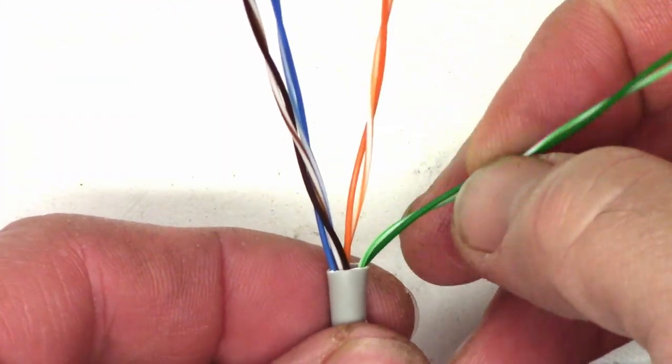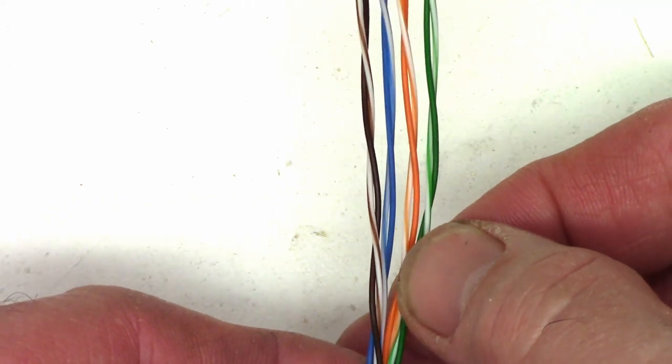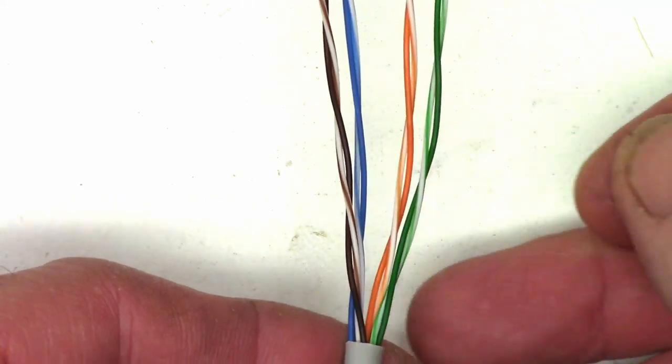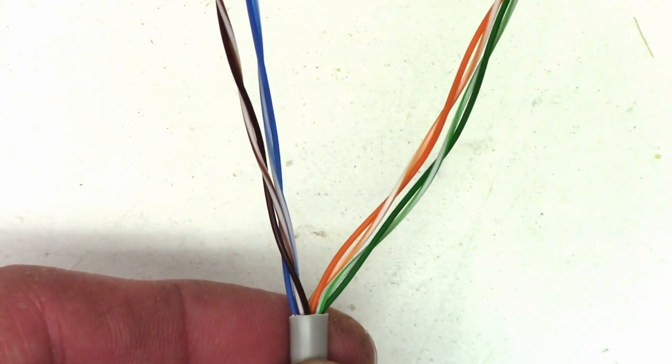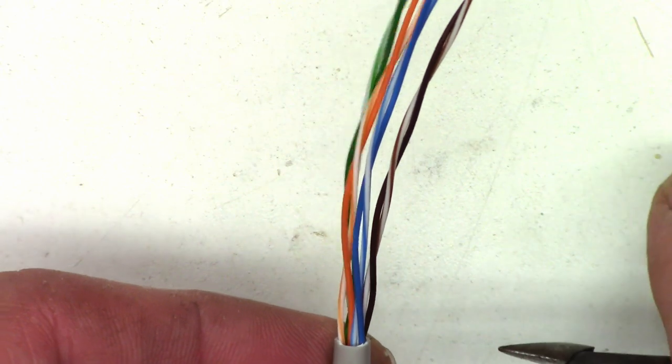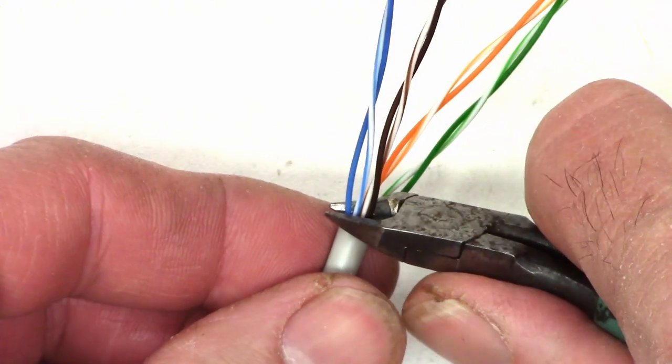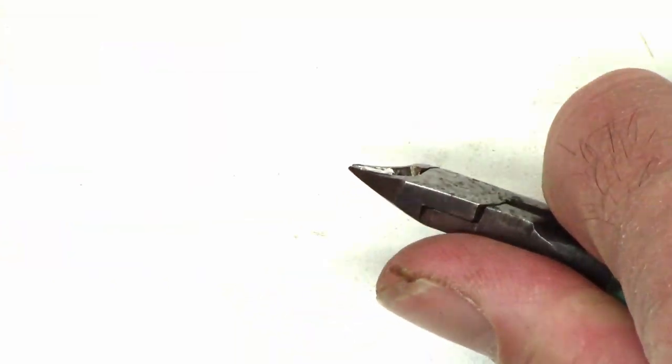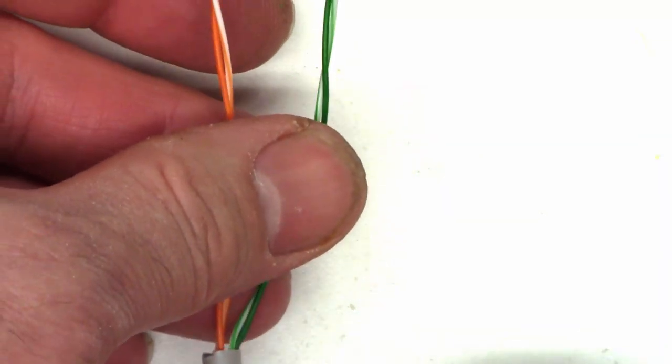So we're only going to use the greens and the oranges. And if you look closely you'll see that they're normally twisted at a different twist rate which minimizes interference from the other cables. So I don't really care about the blues or the browns at this point. So I'm just going to go ahead and lop those guys off. They're gone.